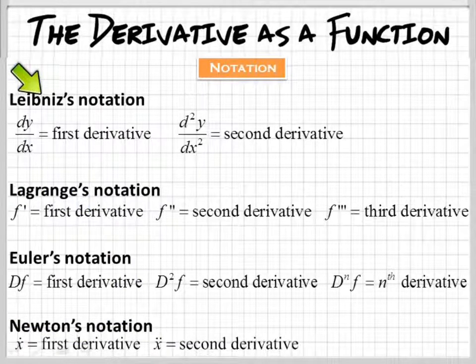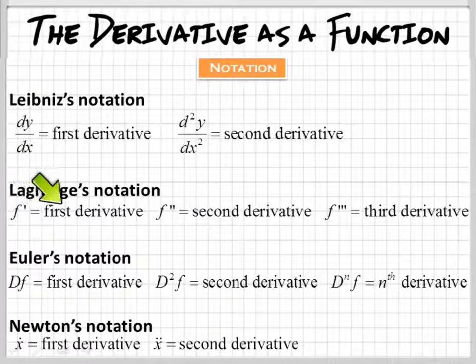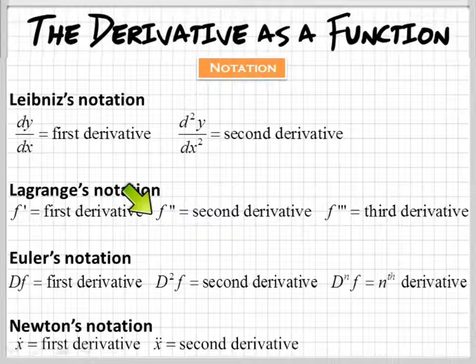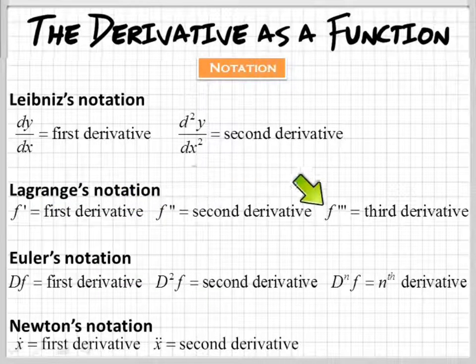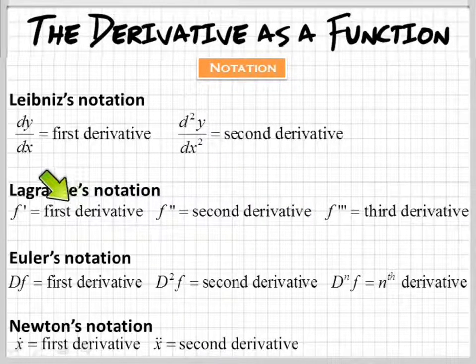we use Lagrange and Leibniz the most. So this one right here says f prime is our first derivative. That's cool to write down. We're not looking at the second derivative yet, but we'll get there, and the same with the third derivative. Oh, there's multiple derivatives. Yeah, but we're only working on first derivatives. Don't get ahead of me.